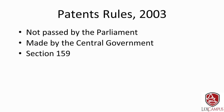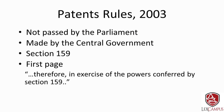Because rules are not passed by parliament and are made by the central government, they give flexibility to introduce rules as and when required. The power for the central government to make rules is contained in Section 159 of the act, which grants this power over a host of things listed in subsection 2. The preamble to the patent rules states: 'in exercise of the powers conferred by Section 159, the central government hereby makes the following rules.' The rules are thus what we call delegated legislation — derived from the act and must remain within its framework.